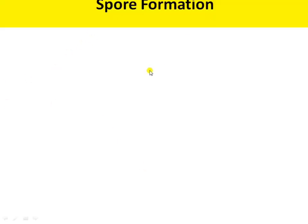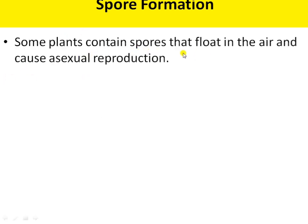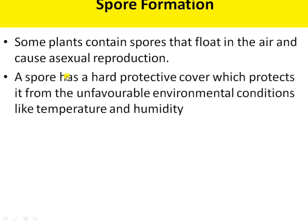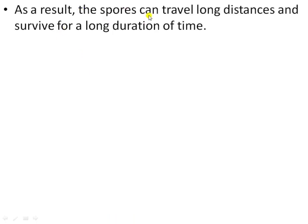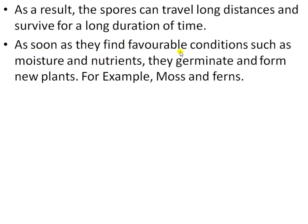Next is spore formation. It is also a type of asexual reproduction. Some plants contain spores that float in the air and cause asexual reproduction. It is a common method of reproduction in a number of fungi like bread mold, fern, and mosses. The spores are the asexual reproduction bodies. A spore has a hard protective cover which protects it from unfavorable environmental conditions like temperature and humidity. Because of this hard covering, spores can travel long distances and survive for a long duration of time. As soon as they find favorable conditions such as moisture and nutrients, they germinate and form a new plant.